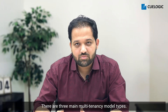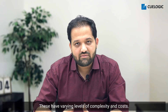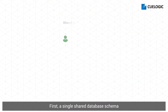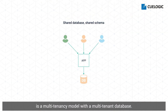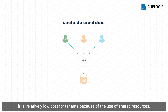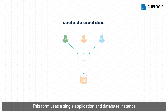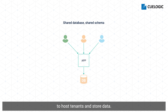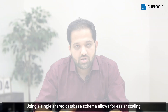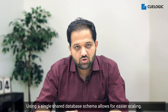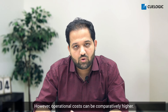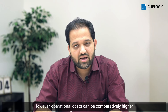There are three main multi-tenancy model types, with varying levels of complexity and cost. First, a single-shared database schema is a multi-tenancy model with a multi-tenant database. This is the simplest form out of the three. It is relatively low cost for tenants because of the use of shared resources. This form uses a single application and database instance to host tenants and store data. Using a single-shared database schema allows for easier scaling. However, operational costs can be comparatively higher.